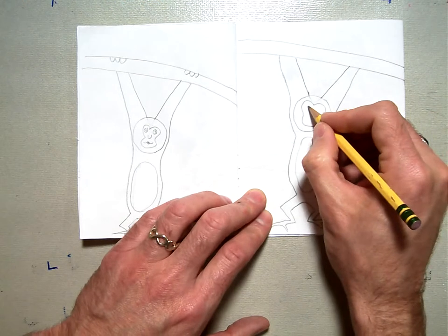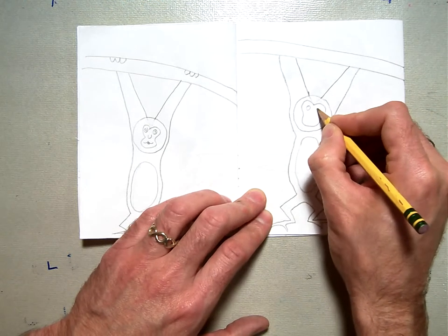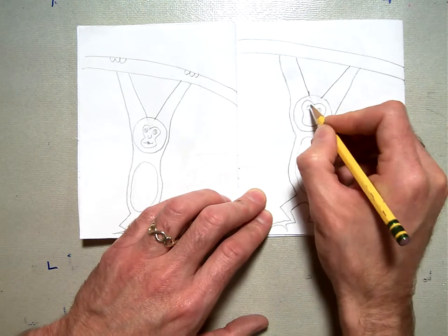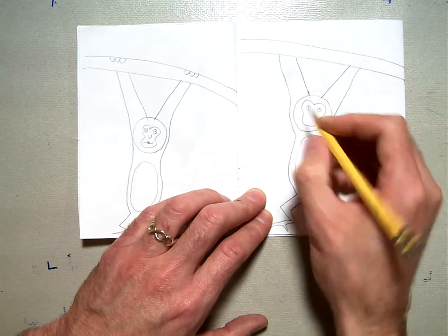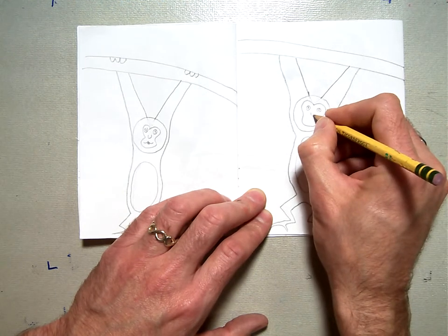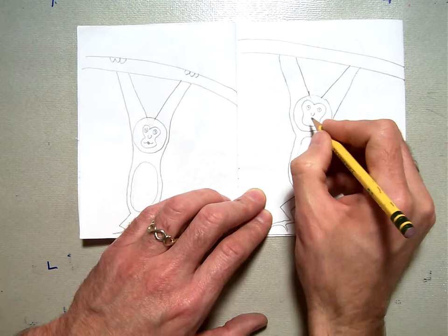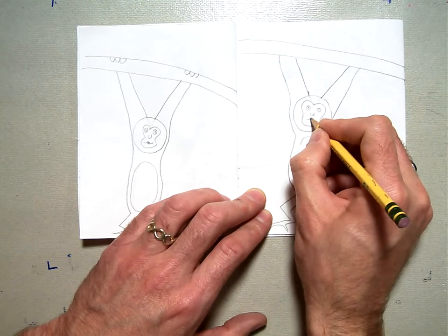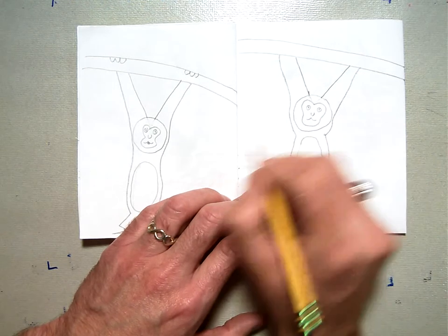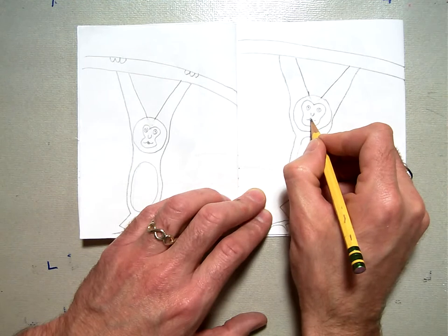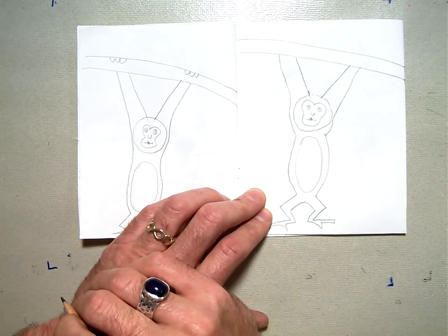Then for the eyes just do two little circles. Pupil in the center. A little U shape for his nose. And a little swoop up for his mouth. And then if you want to a little curve here and just fill that little spot in.